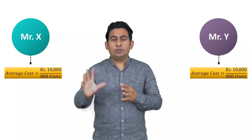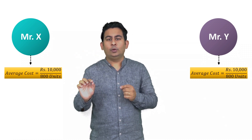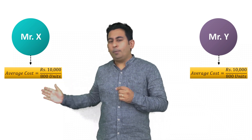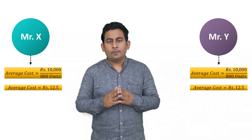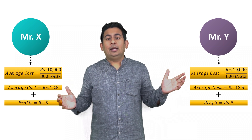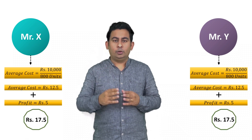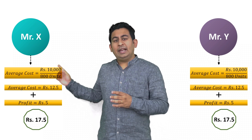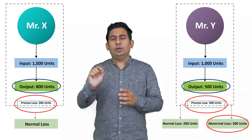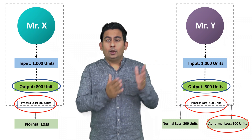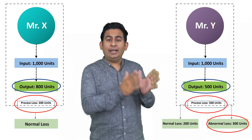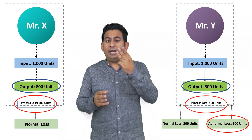Even though the output of Mr. X and Mr. Y is different, their average cost has to be the same. The average cost is the process cost of 10,000 rupees divided by the normal output of 800 units — so the average cost is 12.5 rupees per unit for both. Adding a profit of 5 rupees per unit, both will sell their output at 17.5 rupees per unit. Mr. X will sell 800 units at 17.5, whereas Mr. Y will sell only 500 units at 17.5.